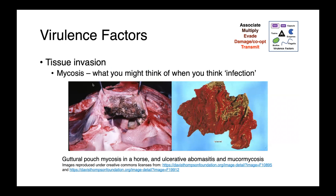So when do we see disease associated with fungi? The pathogenesis of fungal-related diseases can either involve tissue invasion — a mycosis — which is really what you think of when you think of an infection. On the left here, we have guttural pouch mycosis in a horse. They have this very unusual anatomic structure in the head and neck thought to be useful for cooling blood going to the brain, and it's a common site of fungal and bacterial infections. On the right, we have ulcerative abomasitis caused by mucormycosis — this fuzzy mold growing on the abomasum of this animal.